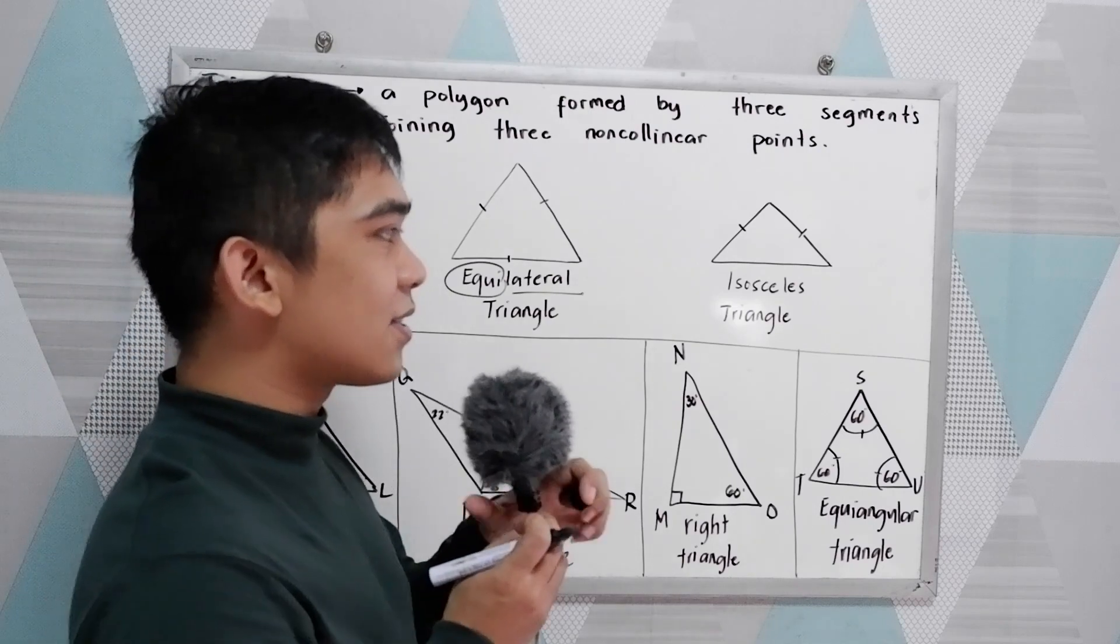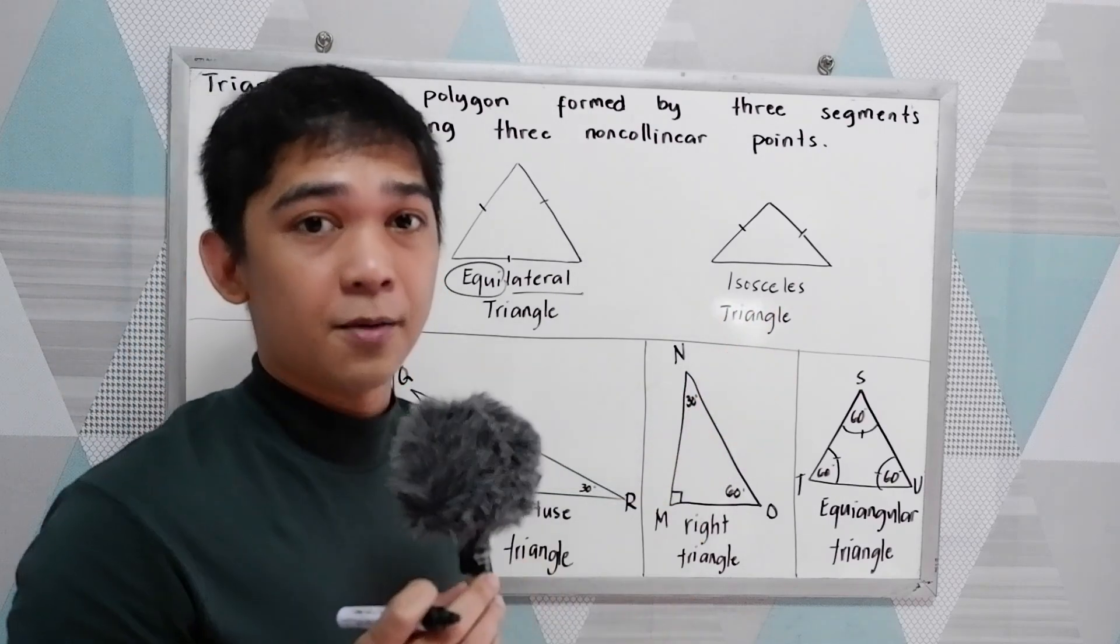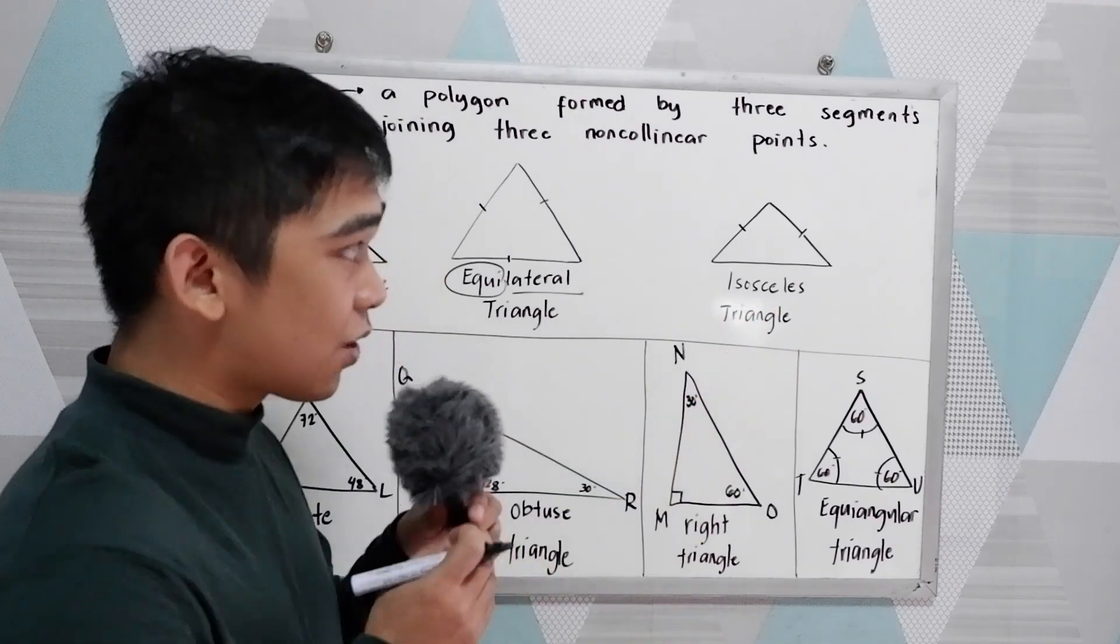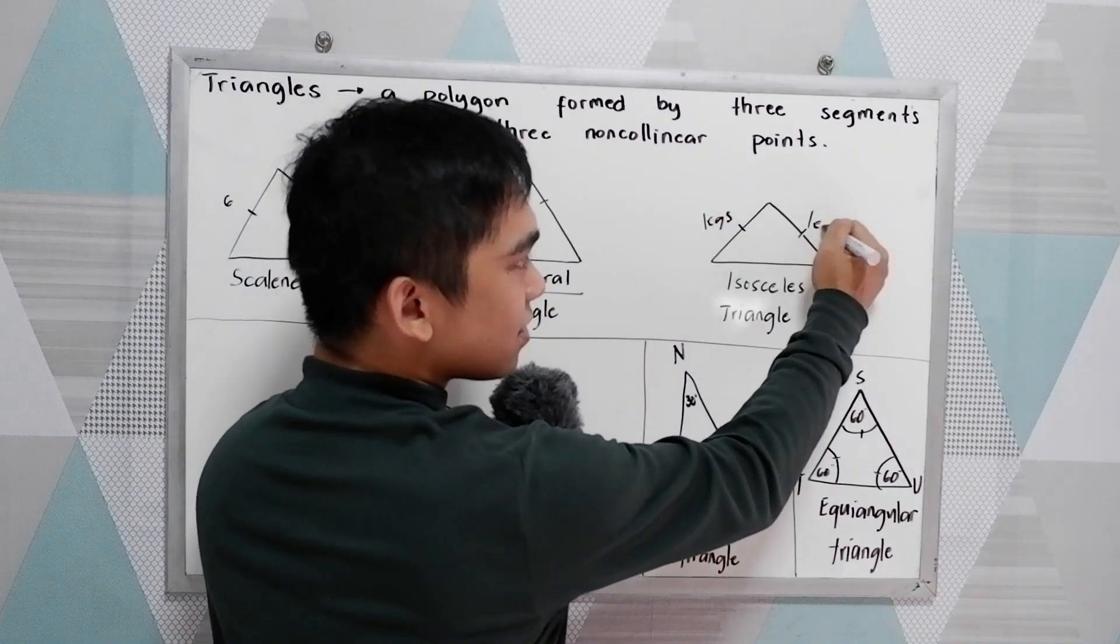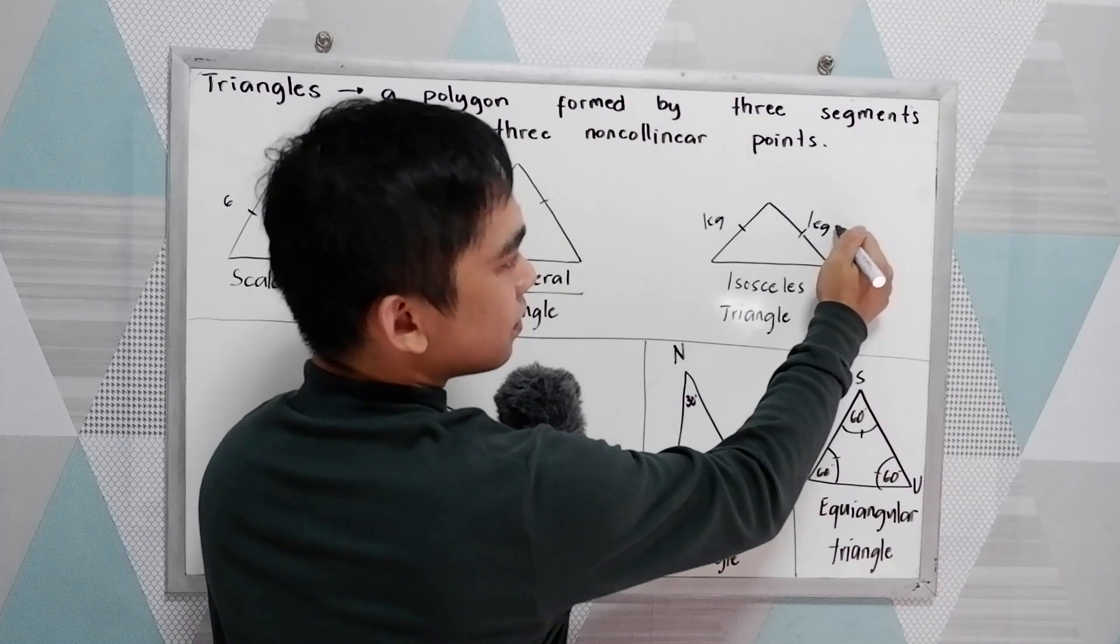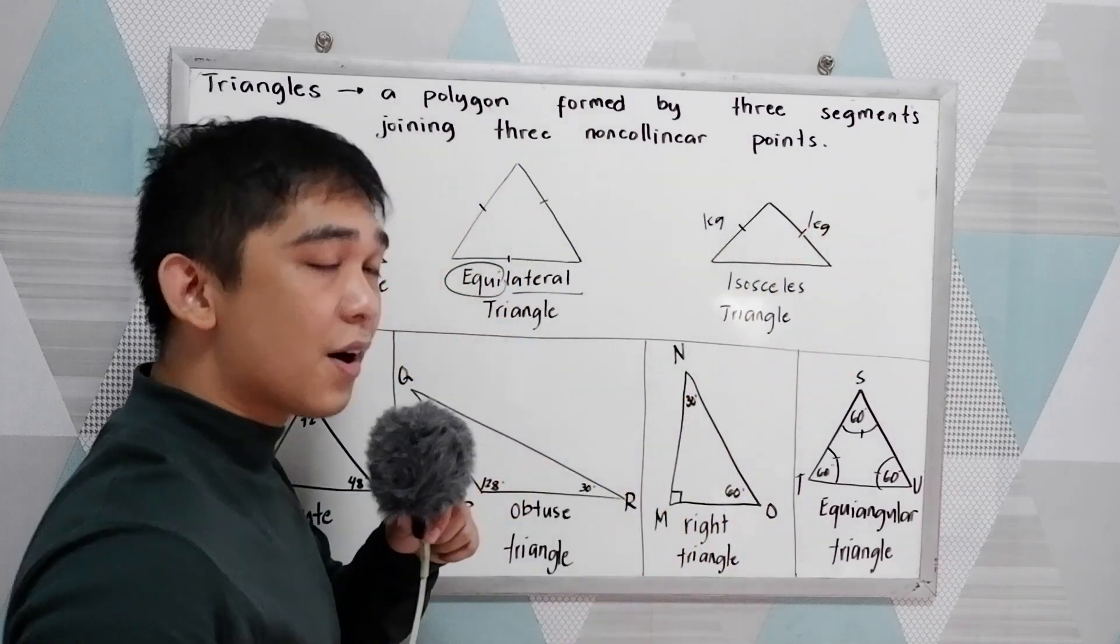Next is the isosceles triangle. Isosceles triangle means the two legs, usually called the legs, the two legs are equal.